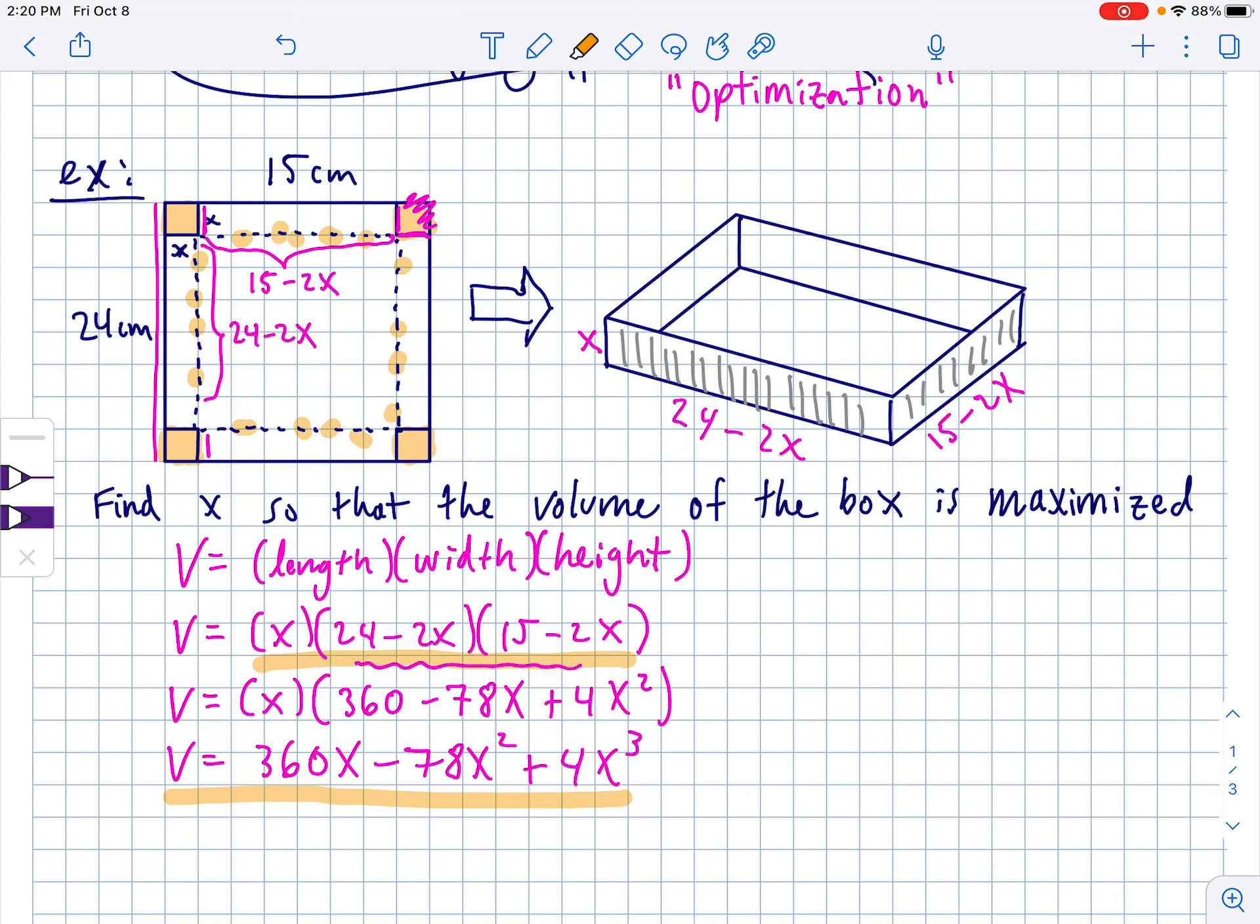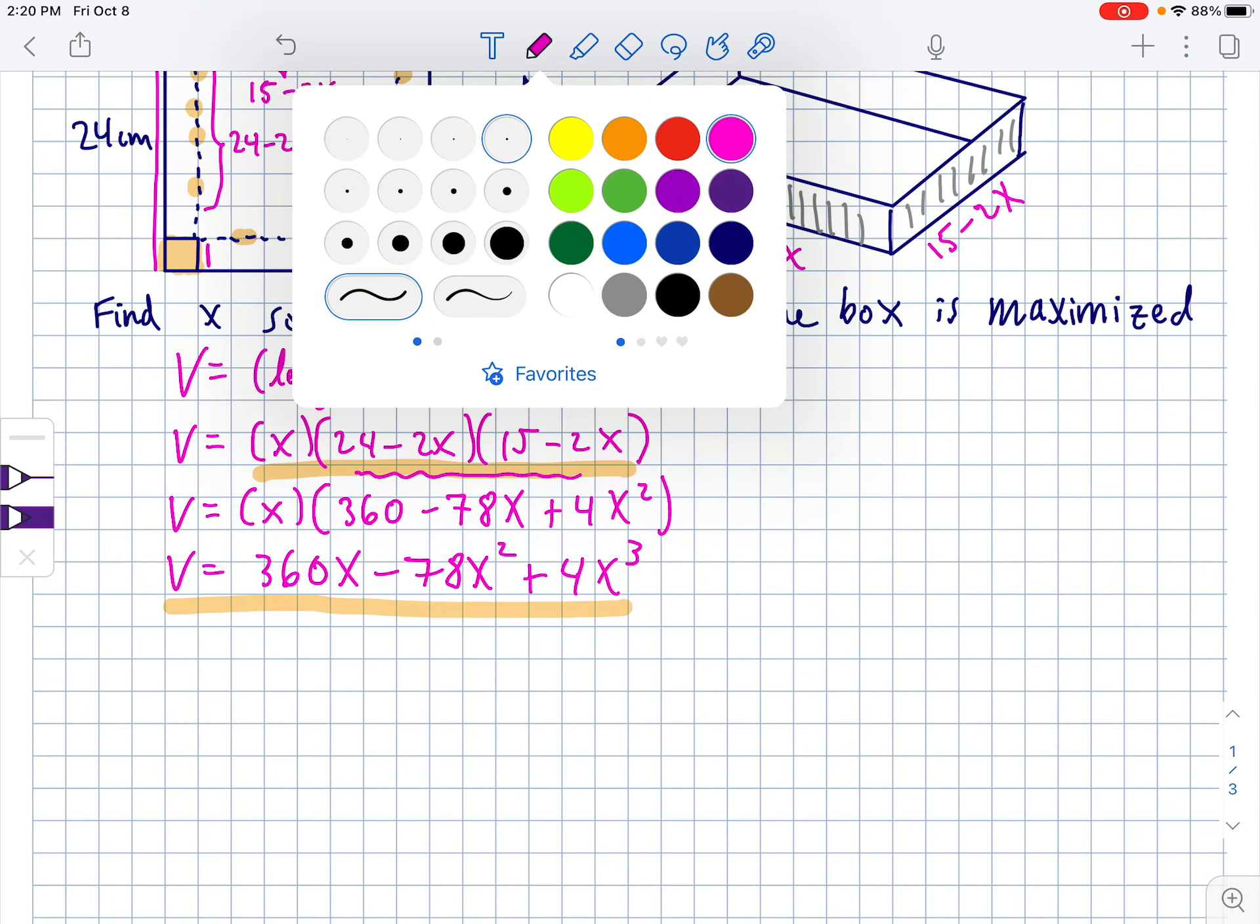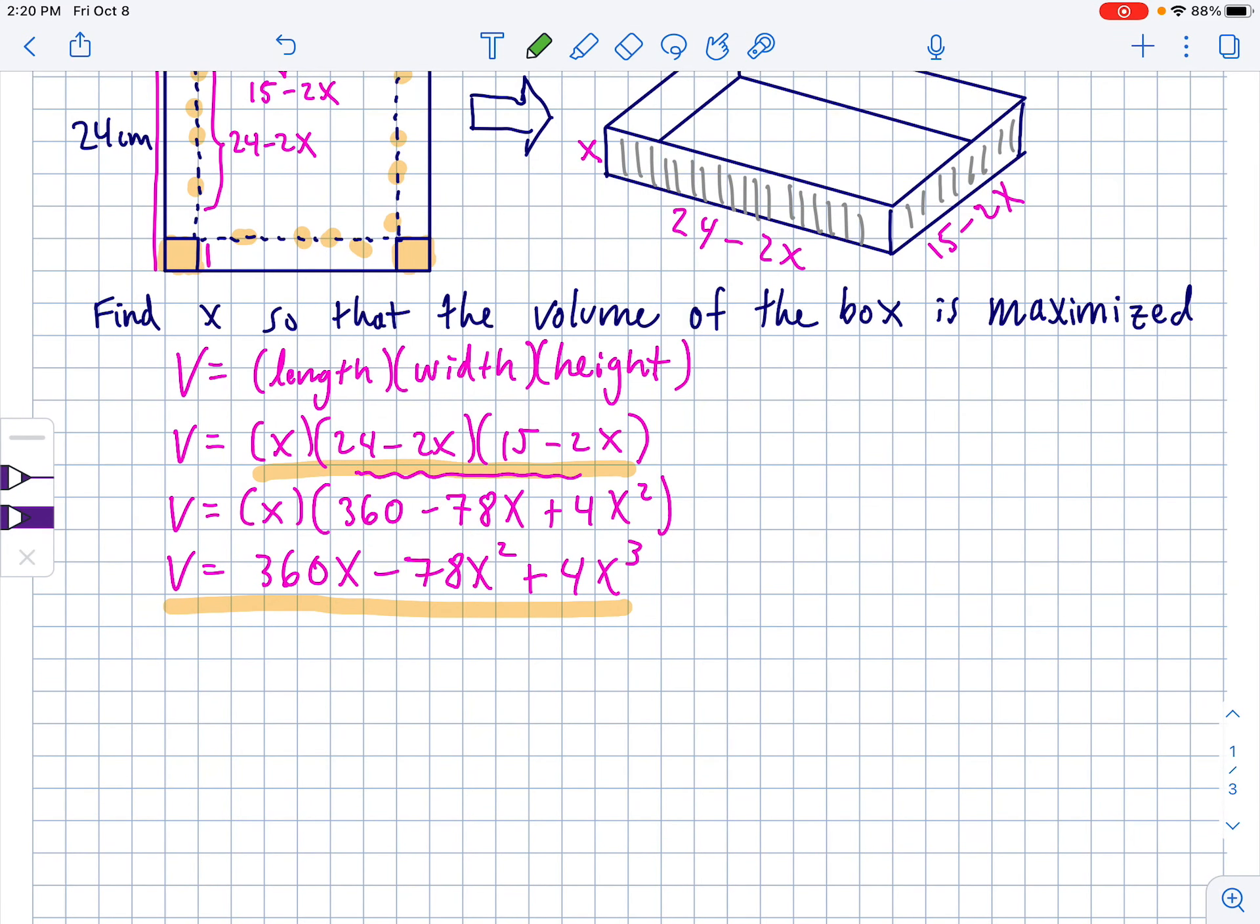Now this volume equation is like you choose an x value and feed it into it and then crunch that out and then it'll tell you the volume of the box. If we want to maximize the volume of the box, maximums happen at like a local max of the equation. So based off our derivative knowledge, if we take the derivative and set it equal to zero, that's where we can find local maximums and local minimums. So let's do it. Let's find the derivative.